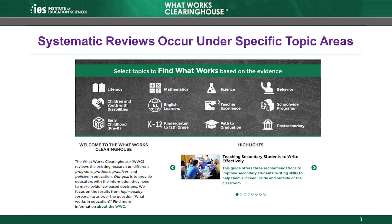The WWC has developed an overall set of standards and procedures to review education research. These are described in the WWC Procedures and Standards Handbooks available on the WWC website. In addition to these overall standards and procedures, each WWC review is guided by a review protocol, also available on the WWC website, which outlines additional review parameters and procedures specific to the topic area of interest.